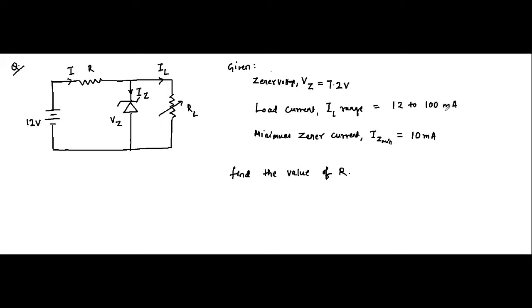The minimum value of Zener current flowing through the diode, IZ_min, is 10 milliamperes. The value of series resistance is not given, the value of load resistance is not given, but what is given is the minimum value of Zener current. When resistance values are not given, we cannot determine the state of the diode using voltage division. So here we have to assume that the diode is activated — it is ON — because nothing has been specified.